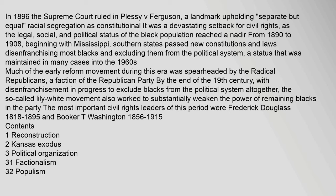The legal, social, and political status of the black population reached a nadir from 1890 to 1908. Beginning with Mississippi, southern states passed new constitutions and laws disenfranchising most blacks and excluding them from the political system, a status that was maintained in many cases into the 1960s. Much of the early reform movement during this era was spearheaded by the Radical Republicans, a faction of the Republican Party.